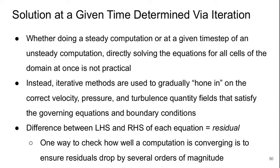One way to think about this is that at each iteration, the difference between the left-hand side and the right-hand side of each equation is something that we call the residual. We ideally want that to go to zero. And one way to check how well a computation is converging or getting close to being finished is to ensure those residuals drop by several orders of magnitude.